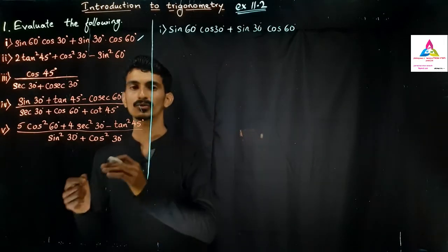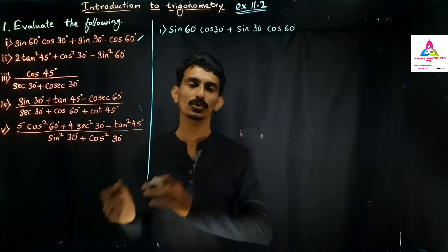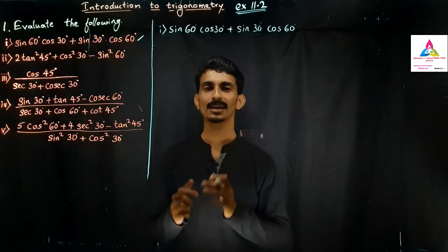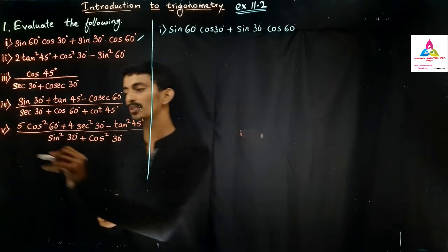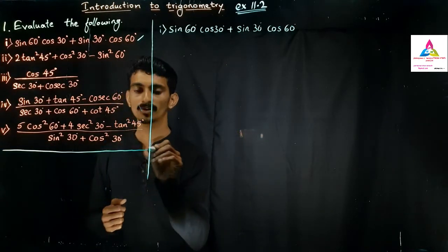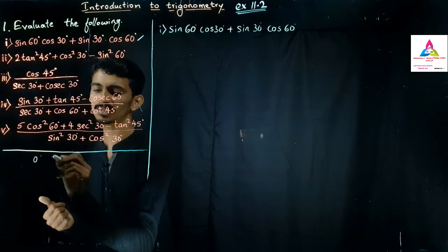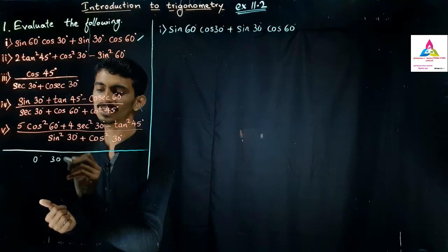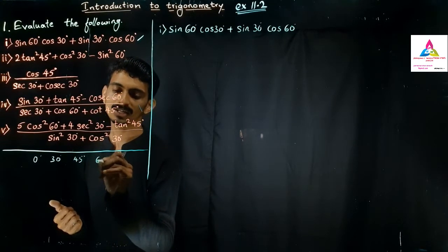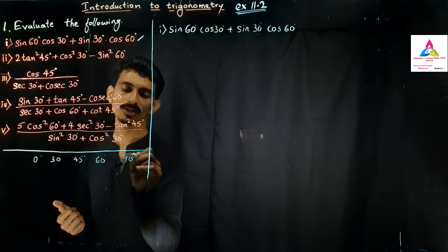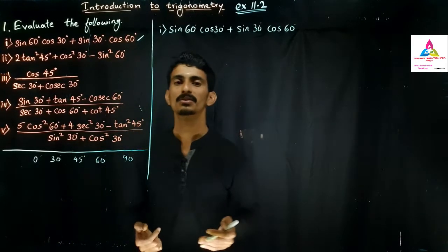We need the standard trigonometry table for sine, cosine, tan, cot, secant, and cosecant for angles 0° to 90°. If you don't know the table, you can copy it from here. Importantly, if you know all the sine values, you can easily find the other ratios.